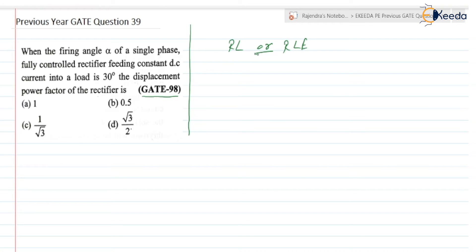So alpha is given equal to 30 degrees. The displacement power factor - they have asked for the displacement power factor. As we know, during the video sessions we have discussed the displacement power factor.